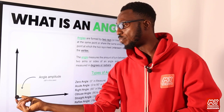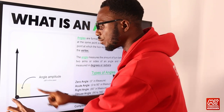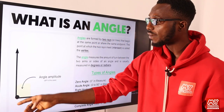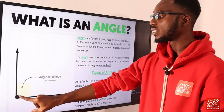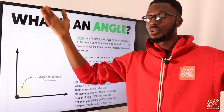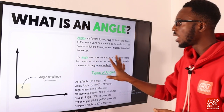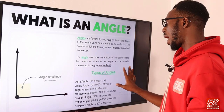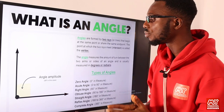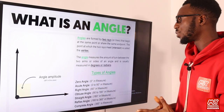This is the vertex here — the point where they actually meet. Sometimes you can have an extension, but whichever way, there is a point of meeting or a point of diverging. The angle measures the amount of turn between two arms or sides of an angle, and you can measure your angle in degrees or in radians.